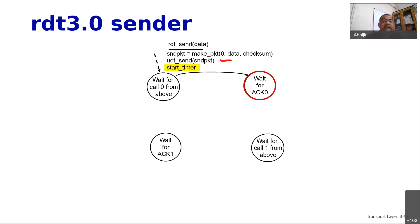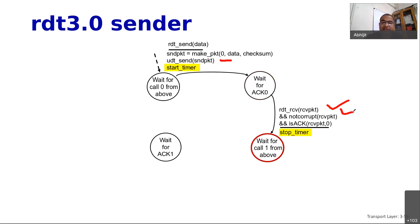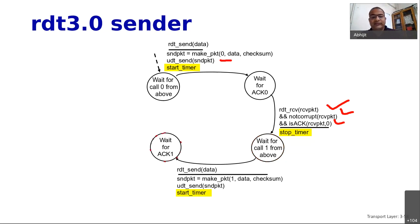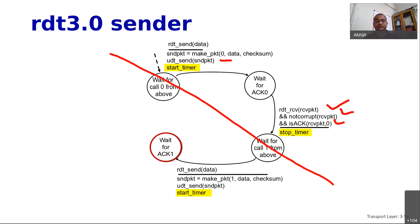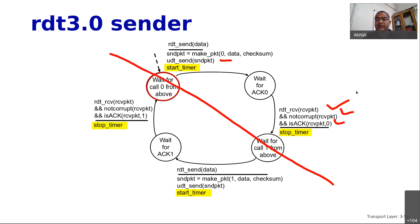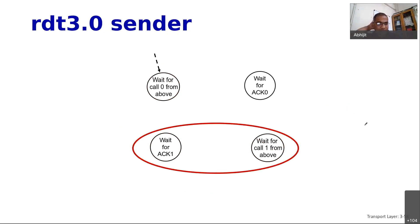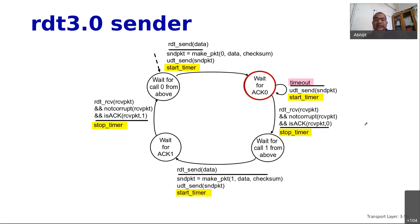When in the 'wait for ACK 0' state, multiple events are possible. In the best case the packet received is not corrupted (verified by checksum) and is an acknowledgement for packet number 0 — the sender concludes the packet was received properly, stops the timer, and waits for the application to send the next packet. The diagram is symmetric around the diagonal. When in 'wait for ACK 1' and the acknowledgement is received, it moves to 'wait for call 0 from above.'